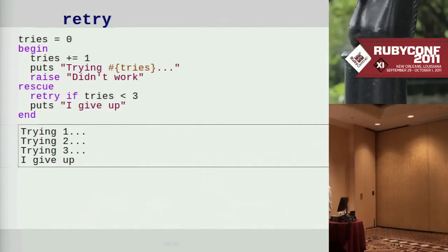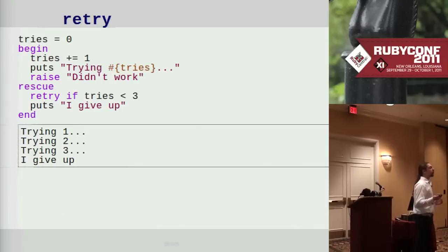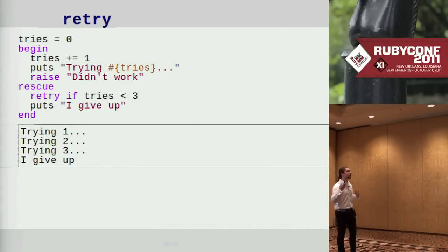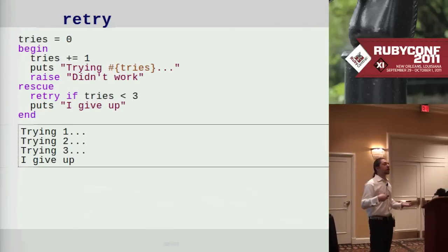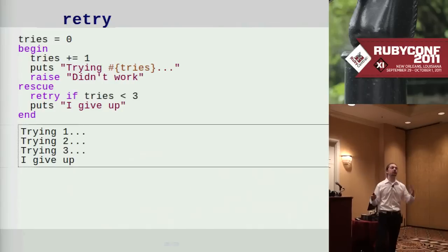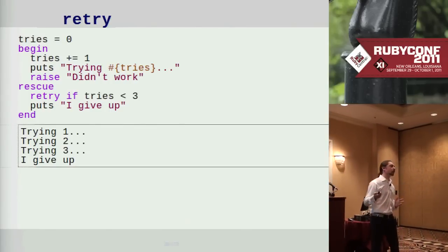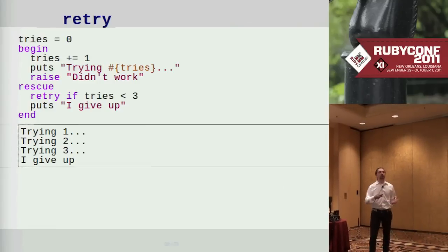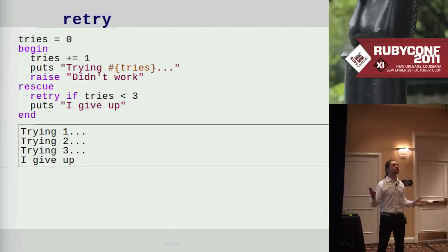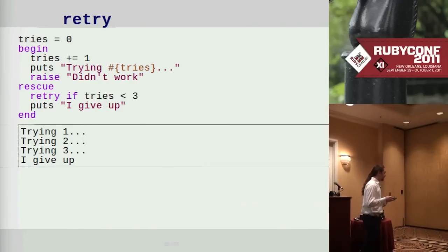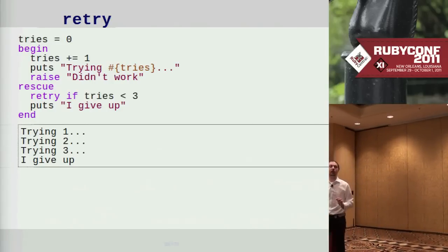Ruby is one of the few languages that gives us a retry capability. Here's a simple demonstration: we define a tries counter, increment it, try to do some operation which may raise an exception, and in the rescue, if tries is under three, we say retry, which throws execution back to right after the begin block and tries again. After three tries, the code gives up. What I find is when I have code that hits some buggy external service, it's often easier to put retry logic in than to rewrite that code with a loop.